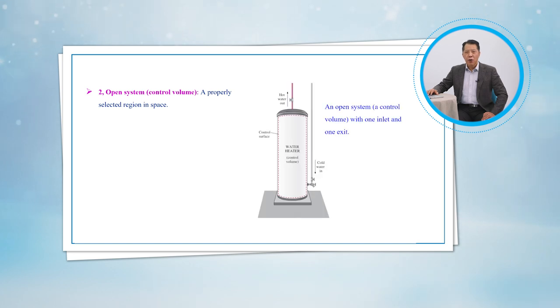An open system or a control volume, as it is often called, is a properly selected region in space. An example when open system with one inlet and one exit is shown. It usually encloses a device that involves mass flow such as a compressor, turbine or nozzle. Flow through these devices is best studied by selecting the region within the device as a control volume.